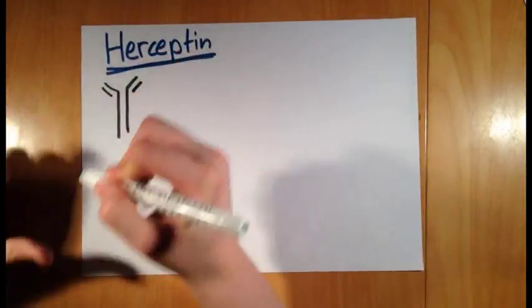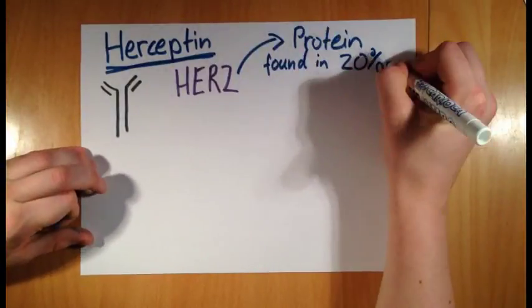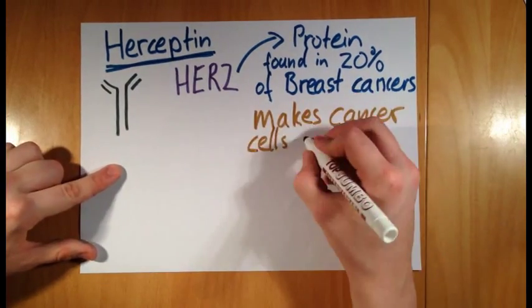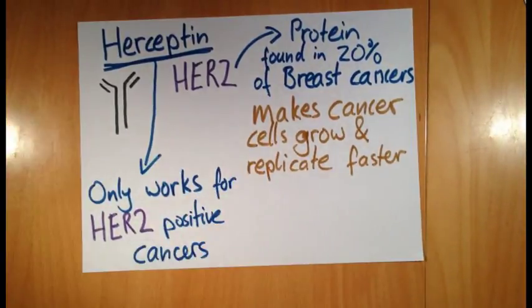Herceptin is a drug with antibodies in it that attack the protein HER2. HER2 is found in 20% of all breast cancers and sometimes in stomach cancers. HER2 makes the cancerous cells grow and replicate faster, so getting rid of it would result in decreased cancer growth.